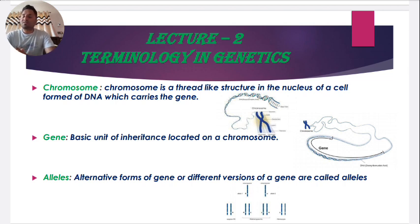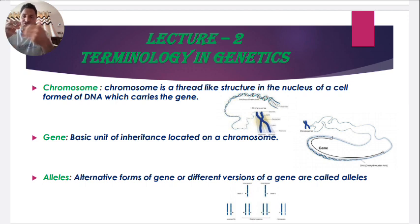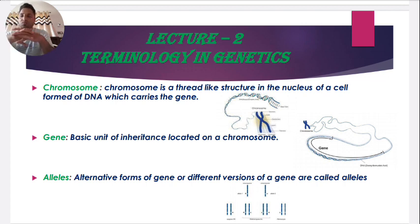The first term is chromosome. As all of you know, the genetic information — that is, the genetic material DNA — is present in the nucleus of the cell. This DNA is the blueprint of our life, and it is packaged into thread-like structures. Those thread-like structures carry the genes, and we call them chromosomes.